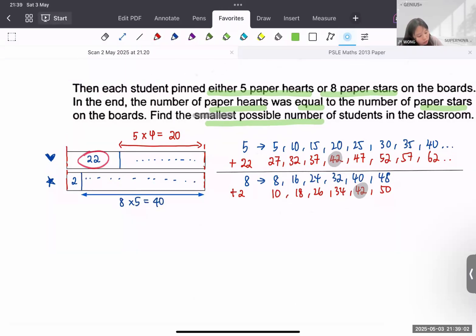So you check. 22 plus 20, just as we said, it's 42. Yes, it's correct. And 40 plus 2 is 42. So from here to here, the total is 42 each. But they say they want us to find the number of students, right? So the students will be times 4 students, and then this one times 5 students. The total number of students will be 5 plus 4, which is 9.